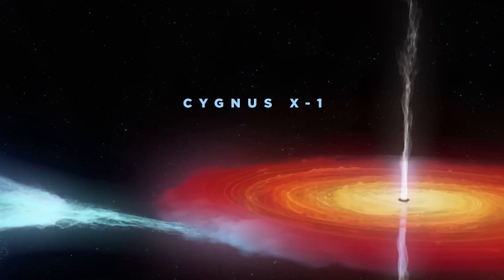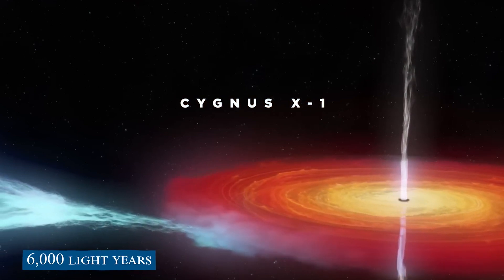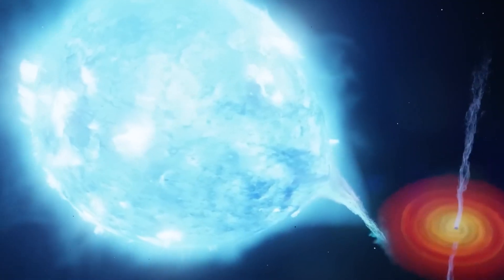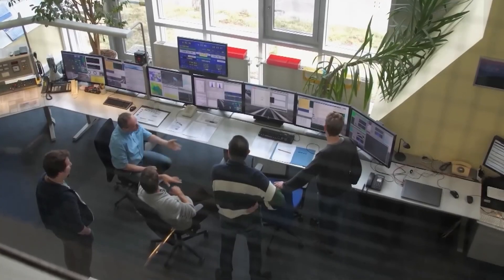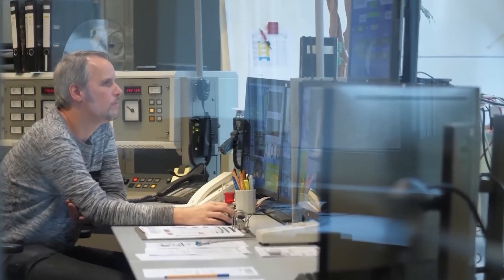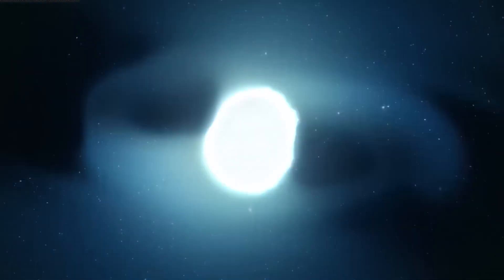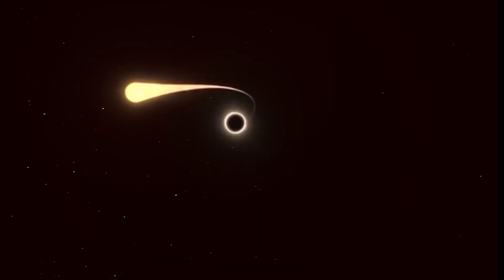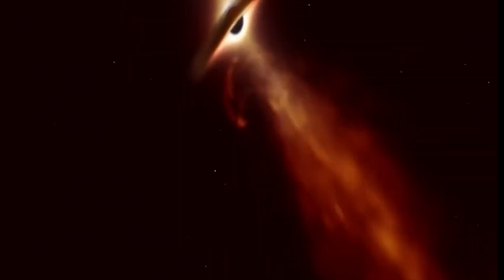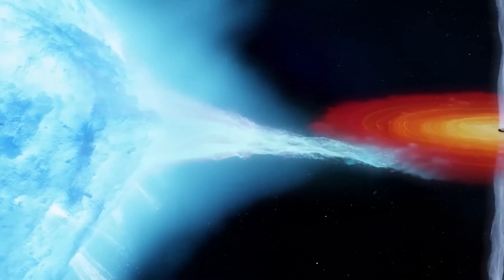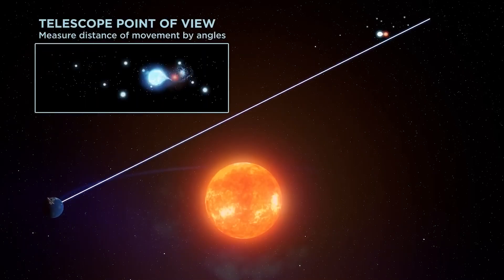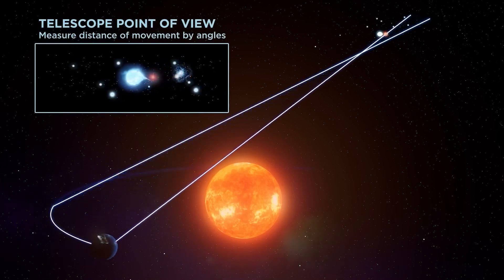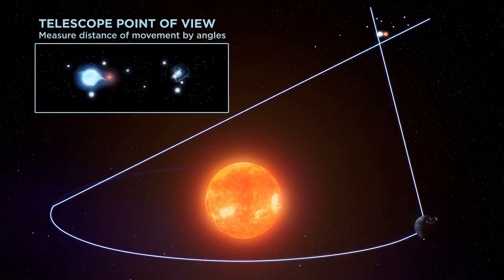Cygnus X-1 is a binary star system located in the Cygnus constellation, about 6,000 light-years from Earth. The system consists of a massive blue supergiant star and a compact object that is believed to be a black hole. In the late 1960s, a group of astronomers discovered that the system was emitting X-rays, a highly energetic form of electromagnetic radiation typically associated with violent cosmic events like supernova explosions and the acceleration of matter into black holes. What puzzled scientists was that the X-rays were not emanating from the blue star itself, but rather from a nearby object that was totally invisible to optical telescopes. This made it practically impossible to get an image of one of these elusive objects on camera.